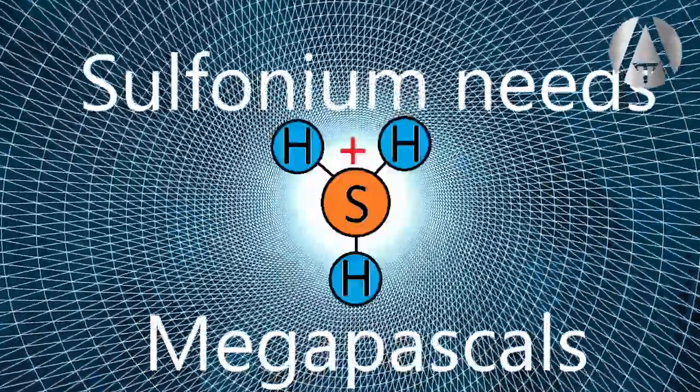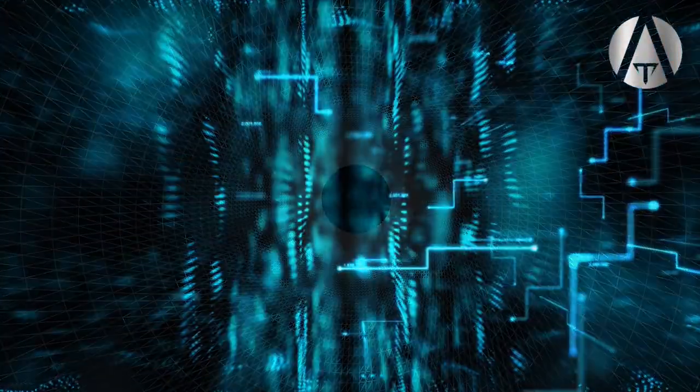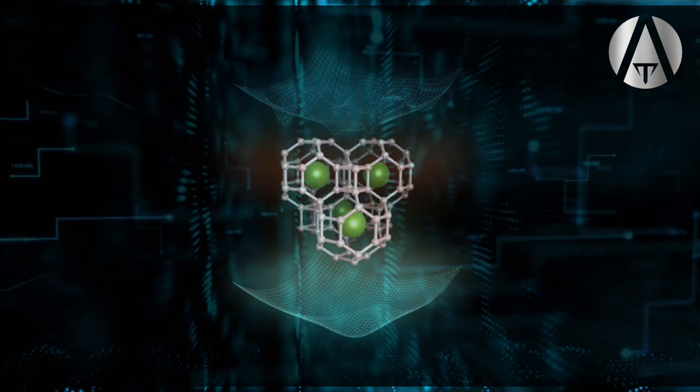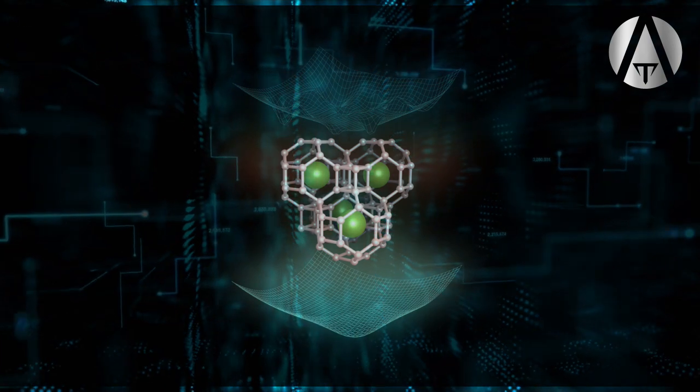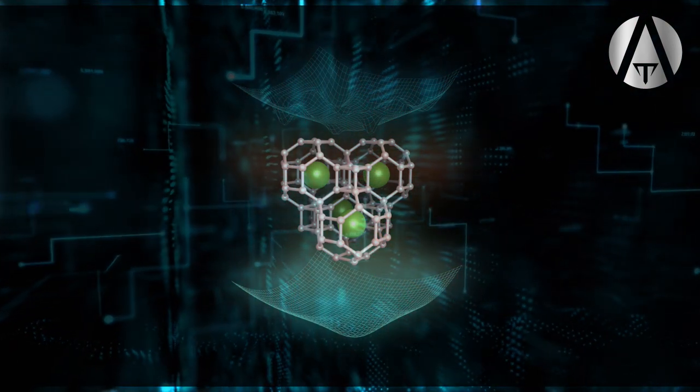The use of these theories allowed first principles calculations based on density functional theory to suggest a new family of superconducting hydrides that possess a clathrate-like structure in which the host atom, usually calcium or yttrium, is at the center of a cage formed by other atoms such as hydrogen.